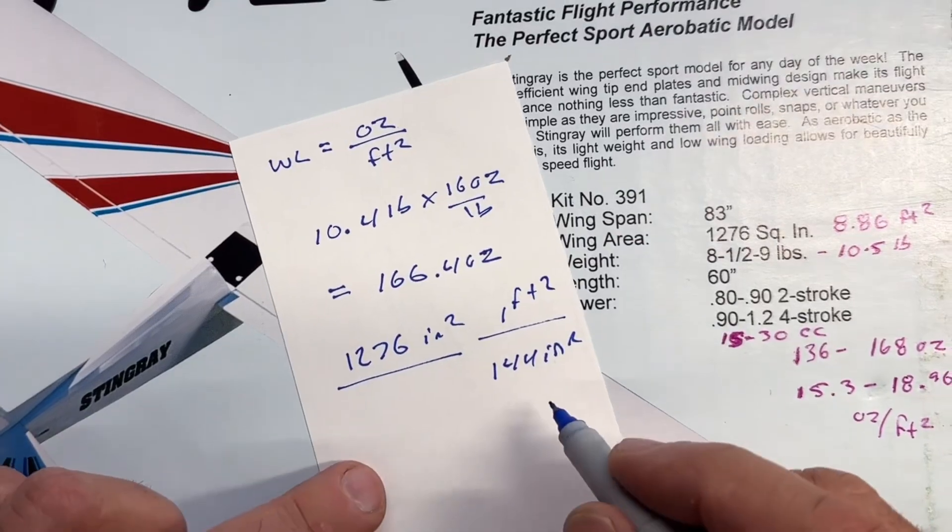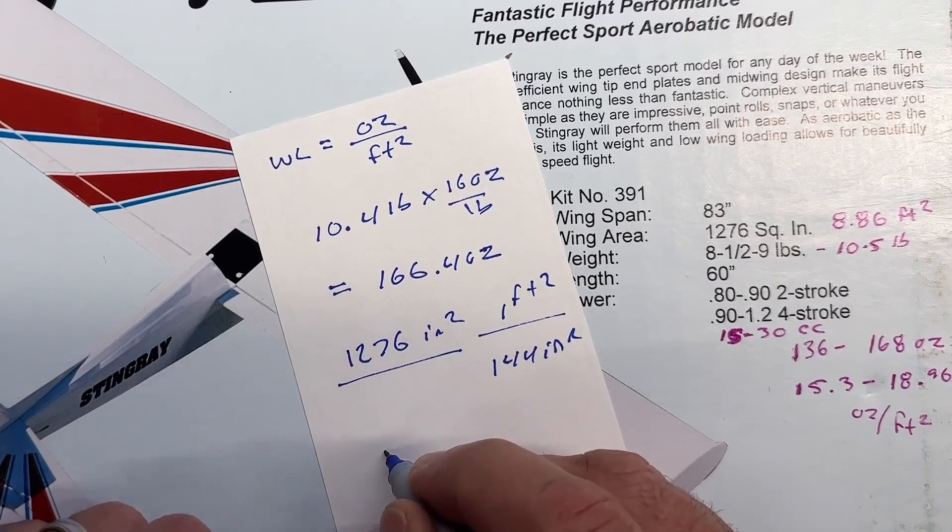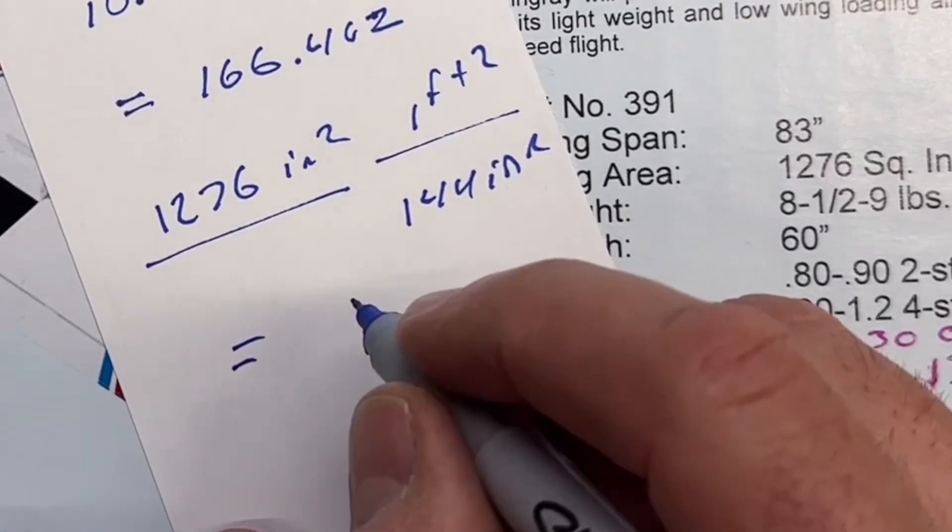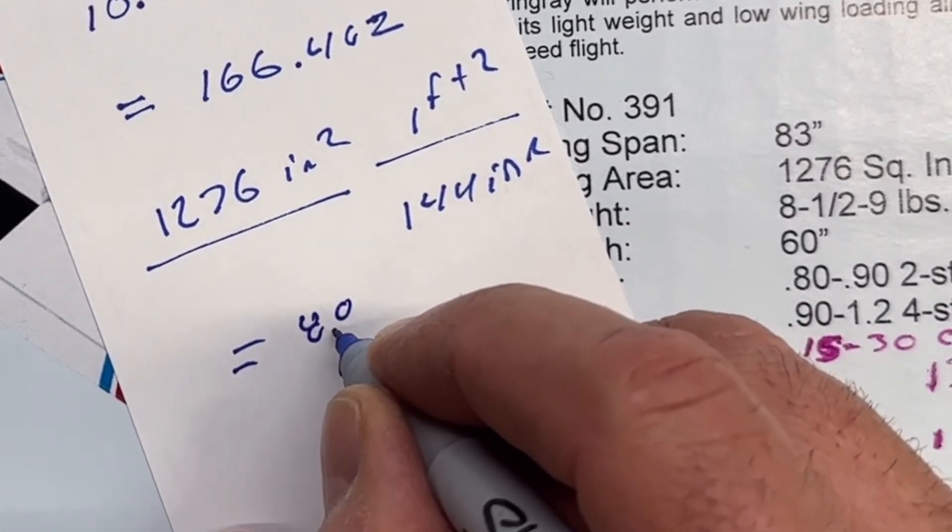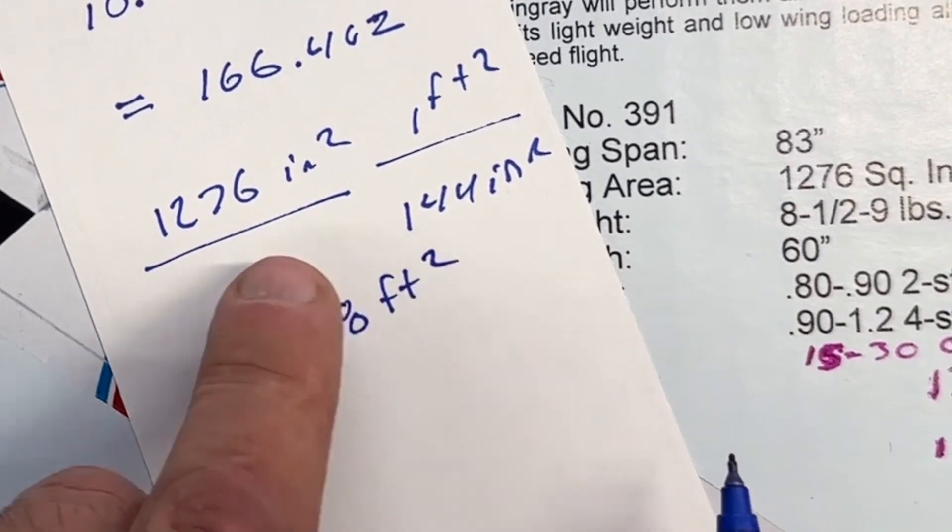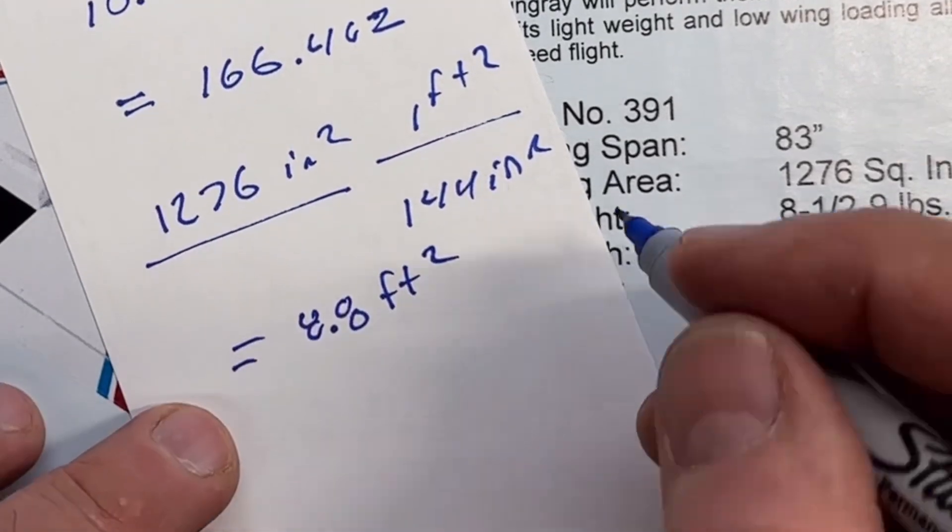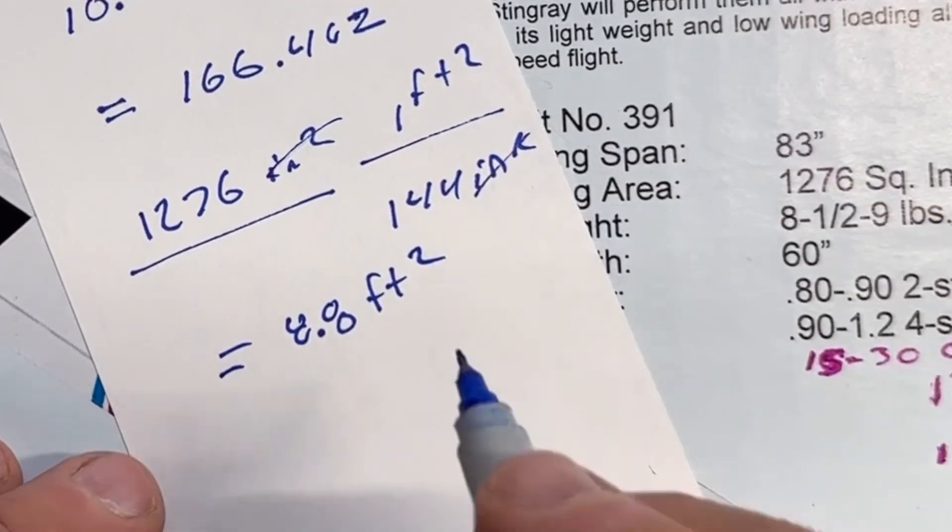And so now it's going to go ahead and do the math on this. And that comes out to be equals 8.8 feet squared. So you just basically divide our 1276 by our 144 and that will convert us to our foot squared.